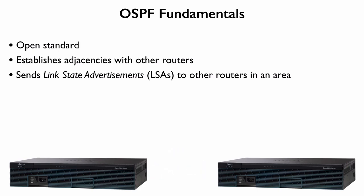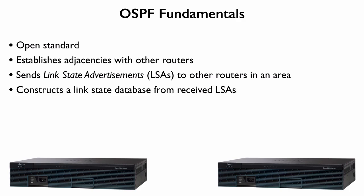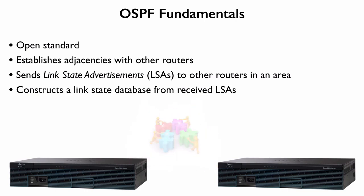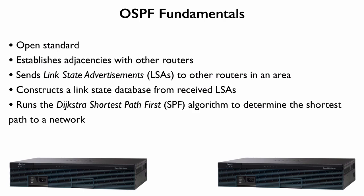By collecting these link state updates, an OSPF speaking router can construct a link state database based on these LSAs. Each area's database should look identical on all of the routers participating in that area. Once a router has its link state database populated and can see a map of the area, it can run an algorithm called the Dijkstra Shortest Path First Algorithm — the SPF — that finds the most efficient path, in terms of cost, to a destination network.